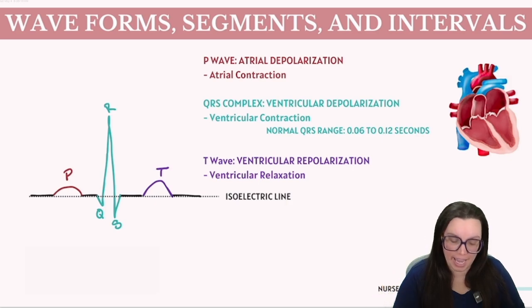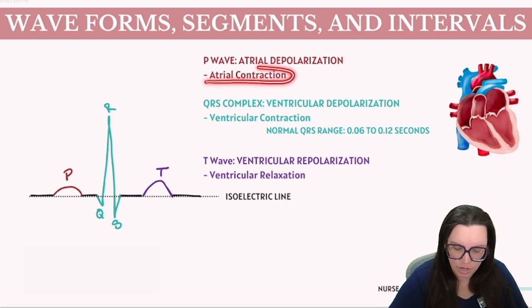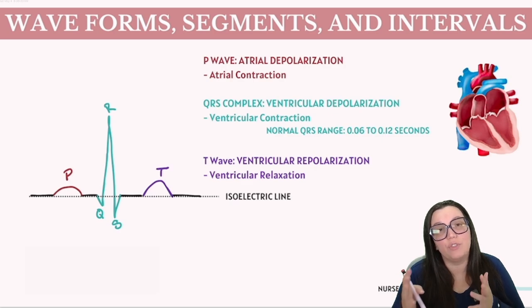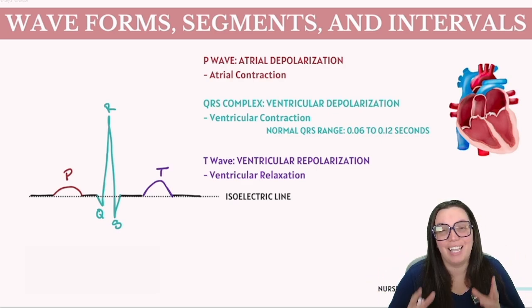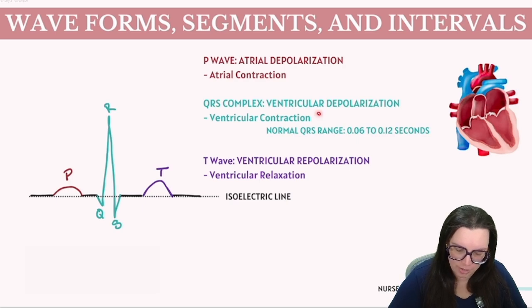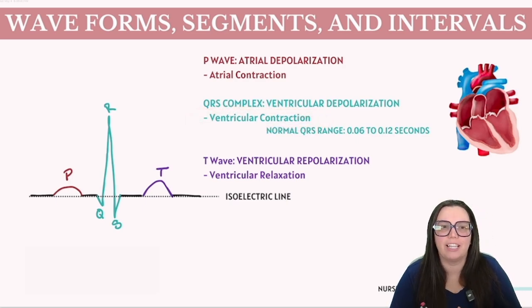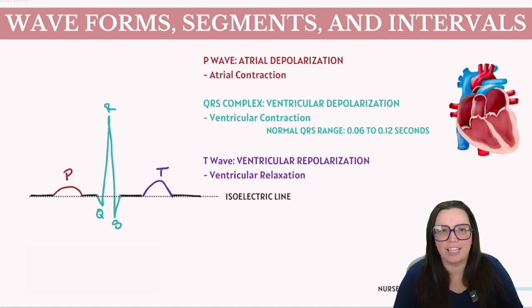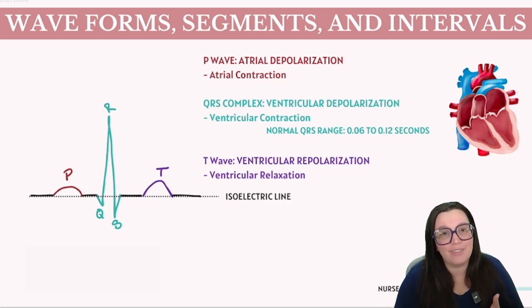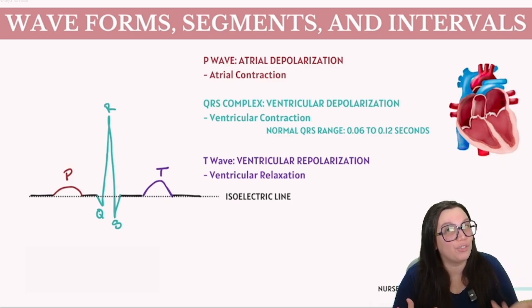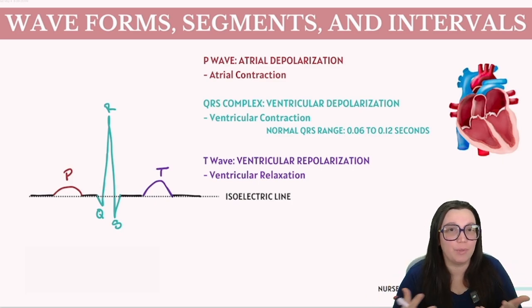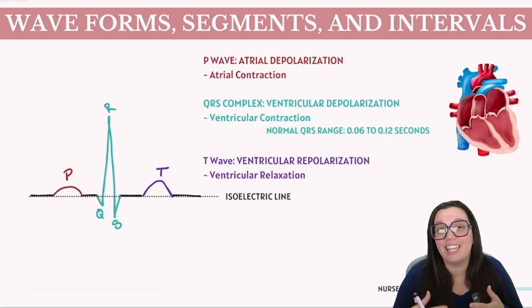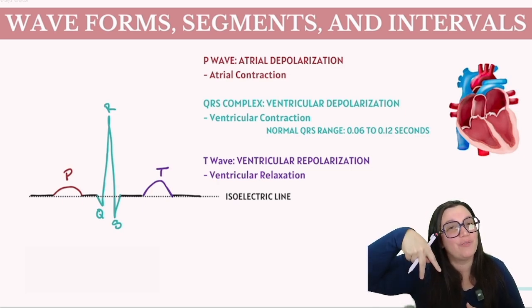The P wave signifies atrial depolarization, also known as atrial contraction — a phase where the two atria contract together. Following that, we have the QRS complex, which represents ventricular depolarization, when the ventricles contract together. Essentially, depolarization is just a fancy way of saying contraction. The P wave is linked to atrial activity, while the QRS complex relates to ventricular activity. A helpful hint: the QRS complex represents an inverted V, with the V representing our ventricles.